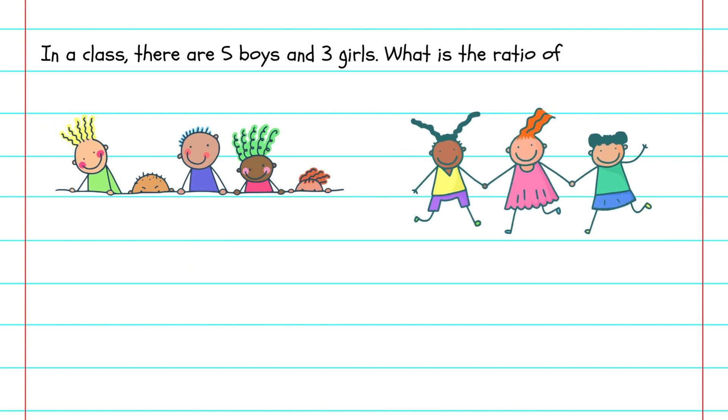Similarly, if the question asked for a ratio of girls to boys, you would write the ratio as 3:5. So, for every three girls, there are five boys.